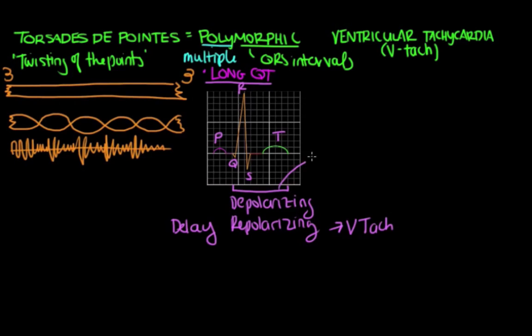Something else to note is that the QT interval is rate dependent. Now what does that mean? So let's say you have a heart rate and it's going very fast. You can imagine that the QT interval here is going to be pretty short because the heart's beating so fast. And on the other hand, if you have a heart rate that's going really slowly, you can imagine that your QT interval might be long and drawn out. So the rate of the heart affects how long the QT is.